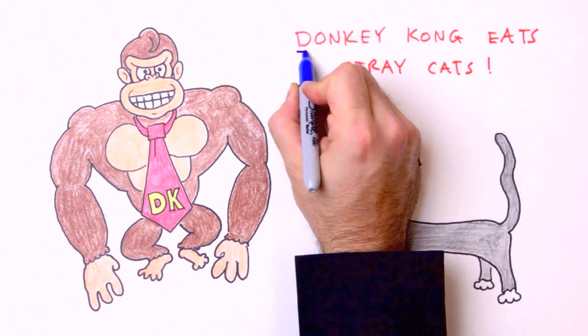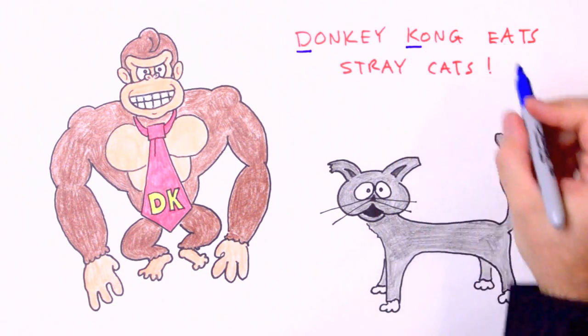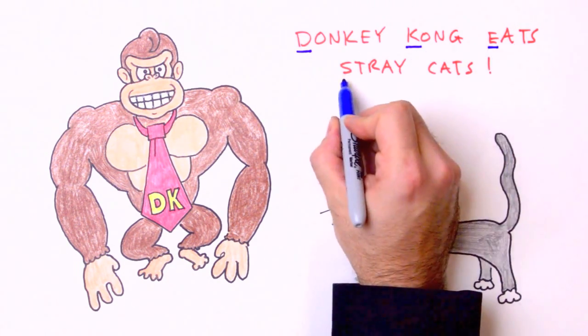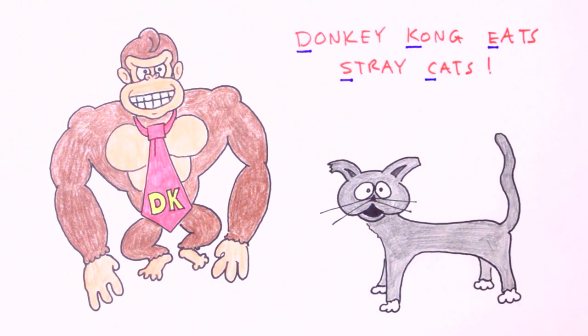So there it is. Draw a picture, knowns and unknowns, equation, solve symbolically first, and check your answer. Donkey Kong eats stray cats.